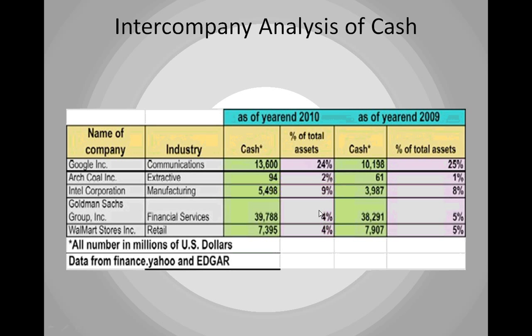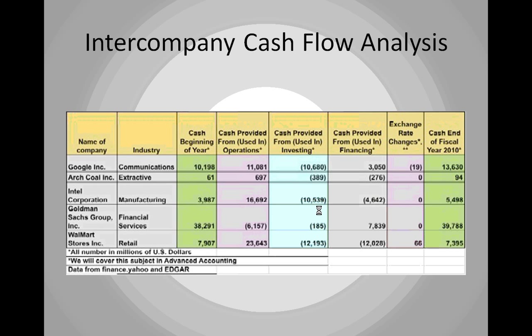Now let's compare cash flows between different companies using the statement of cash flows. Looking at Google Inc. — this chart is available in Chapter 6 of the financial accounting textbook, and I'll post a link to Google Docs so you can see the math. All numbers are in millions of dollars from Yahoo Finance or Edgar 10-K statements. We have cash at the beginning of the year, January 1st, and cash at the end of the year, December 31, 2010, broken into: cash provided from operations, cash used in investing, and cash provided from financing. The last column, exchange rate changes, is covered in advanced accounting, so we'll set that aside for now.